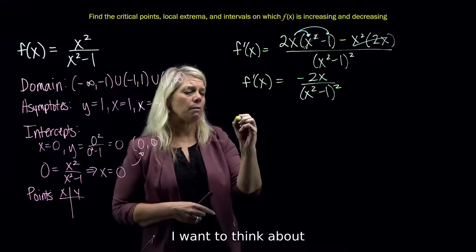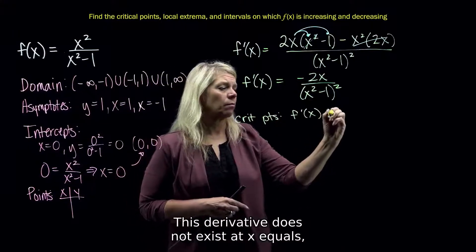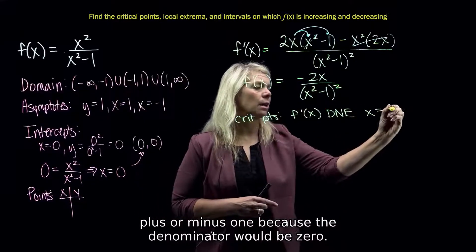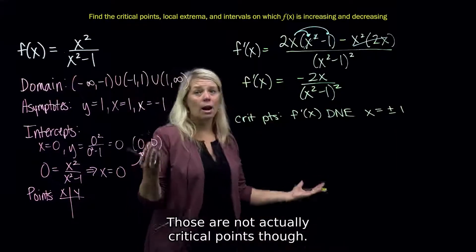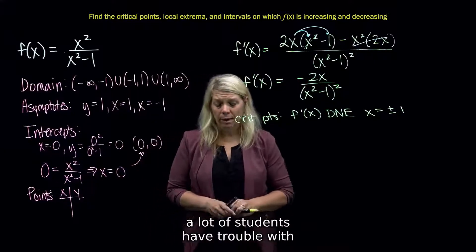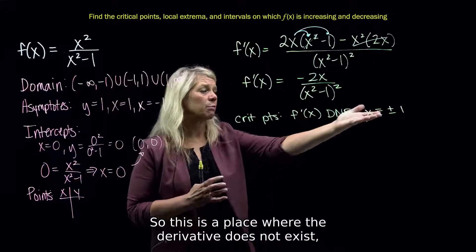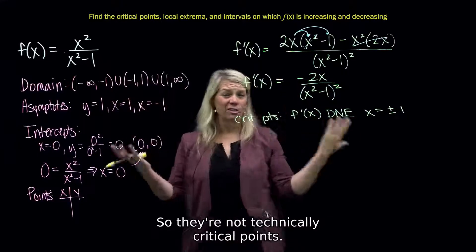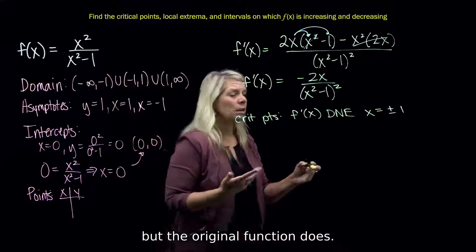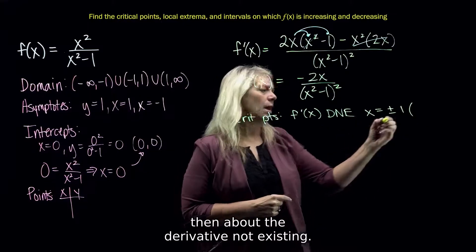In looking for critical points, I want to think about where this derivative does not exist. The derivative does not exist at x equals plus or minus 1 because the denominator would be 0. Those are not actually critical points, though. This is a subtlety that a lot of students have trouble with — this is a place where the derivative does not exist, but it's not even in the domain of the original function, so they're not technically critical points. Critical points are where the derivative does not exist but the original function does.